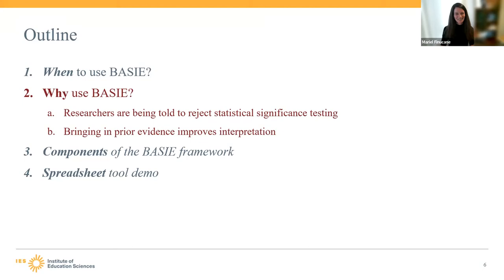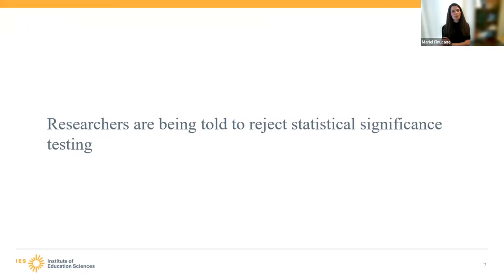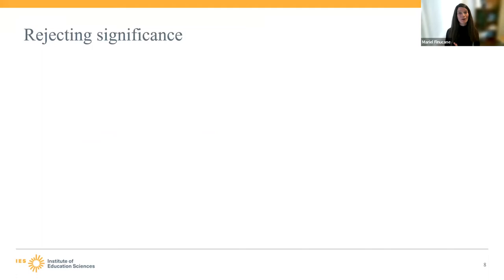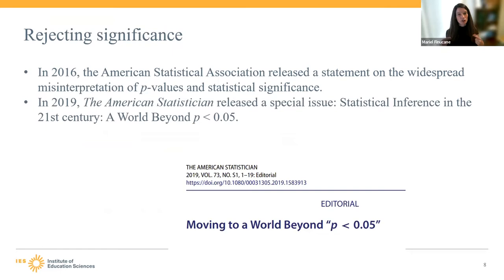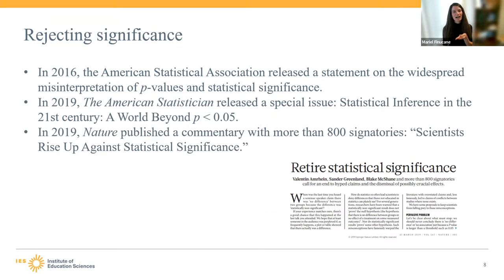We want to help you agree that BASIE is a really good tool for these use cases. First, we want to talk about why p-values aren't a good tool—why many researchers are being told to reject statistical significance testing. In 2016, the American Statistical Association released a statement on the widespread misinterpretation of p-values and statistical significance. Then in 2019, the journal The American Statistician released an entire special issue on life after p less than 0.05. And in that same year, the journal Nature published a commentary with more than 800 signatories about rising up against statistical significance.